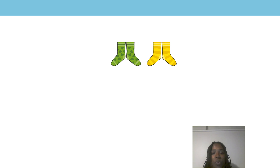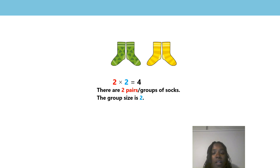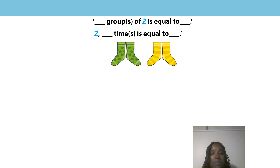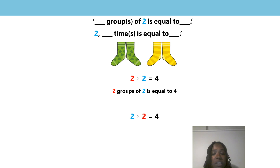Let's use these stem sentences to help us. 3 times 2 is equal to 6 — 3 groups of 2 is equal to 6. 2 times 3 is equal to 6 — 2 three times is equal to 6. There are 6 altogether. Great job! Now I have another one for you. Pause the video, look at this picture, and write 2 equations to match it. How did you get on? Did you write 2 times 2 is equal to 4? That is correct — there are 2 pairs, or 2 groups, of socks and the group size is 2. There are 4 socks altogether. Well done!